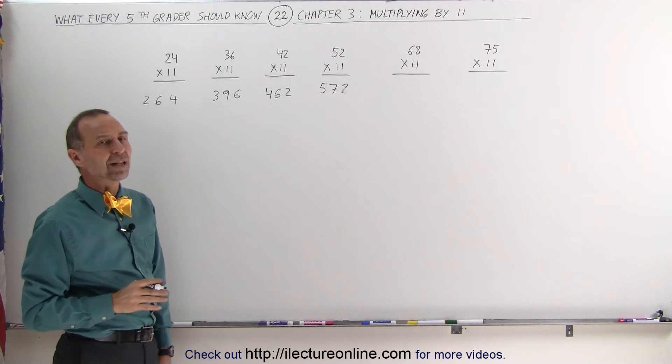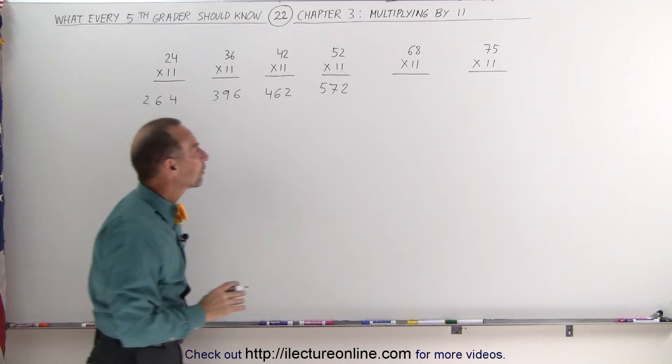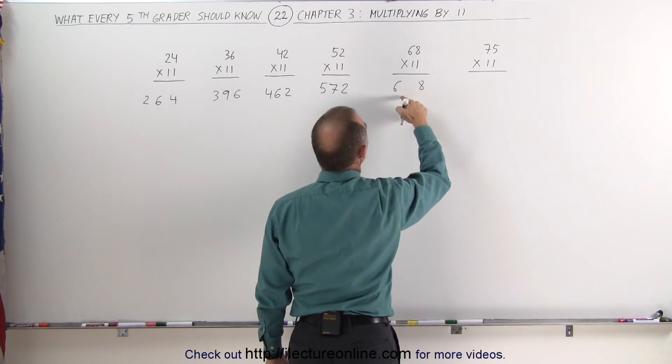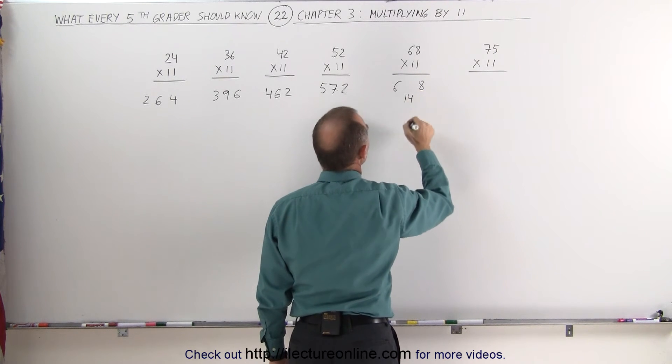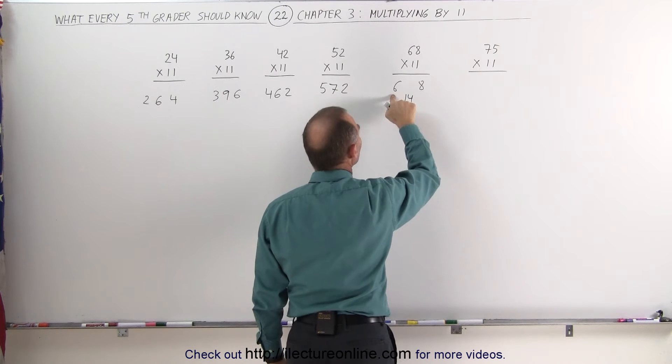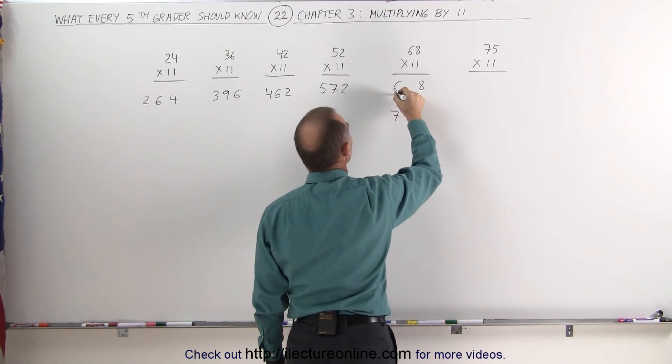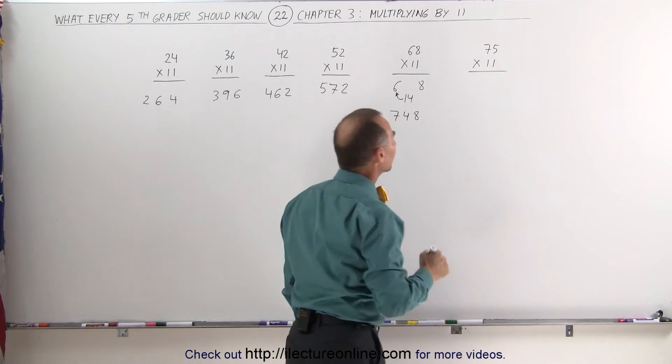Now, what about 68 times 11? That's a little bit more difficult because when you do that, you get 6 and you get 8, but when you add these together, you get 14. So you have to add the 1 to the 6 and this becomes 748. So the 1 is added to the 6 to make that into a 7.